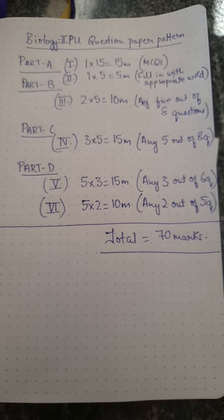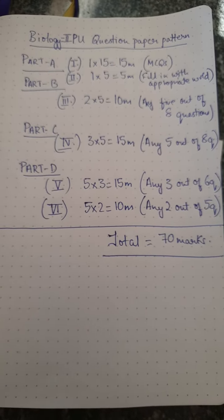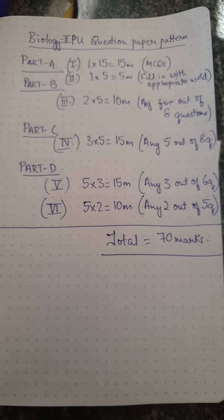Part C, the fourth section, consists of three-mark questions. Again, answer any five questions out of eight, so the total is 15 marks.